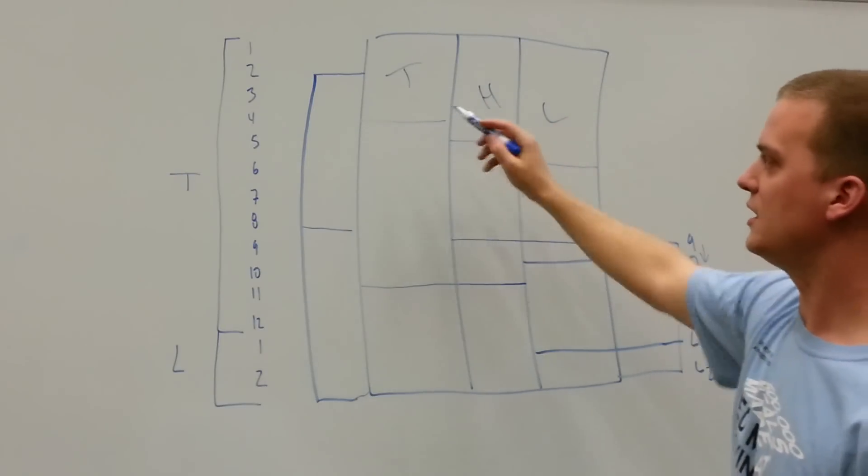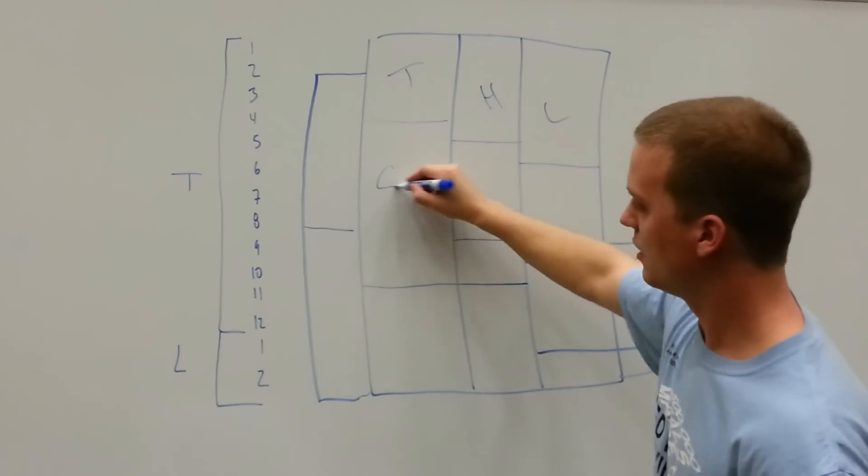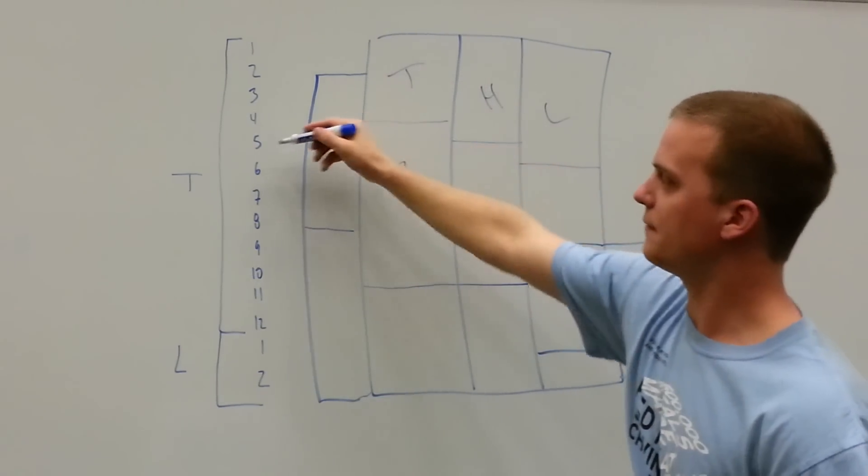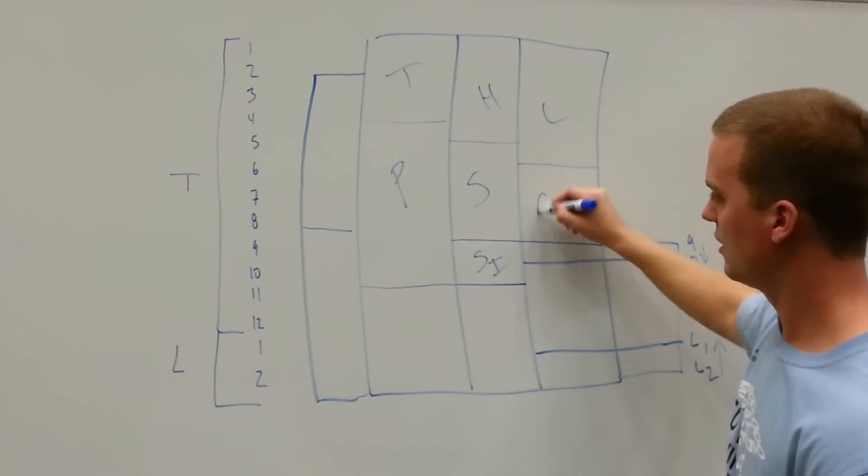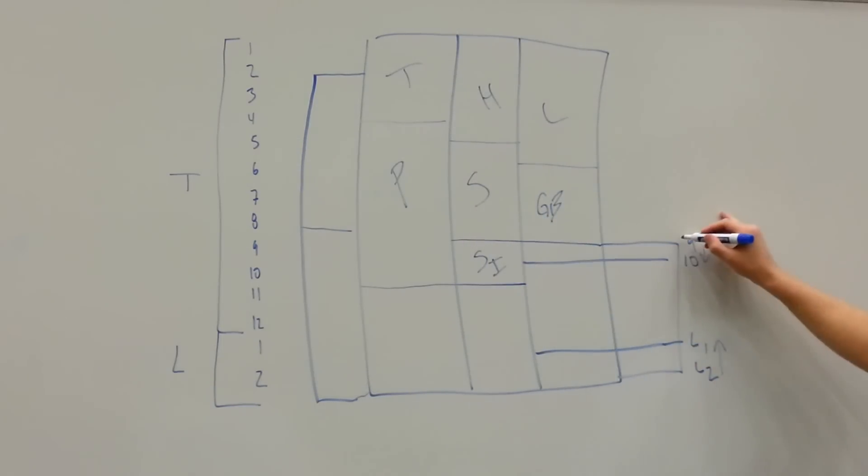Thyroid heart lungs, THL, we've got our pancreas from T5 to T11, we've got our stomach, small intestine, gallbladder. T9 is a very specific point for gallbladder.